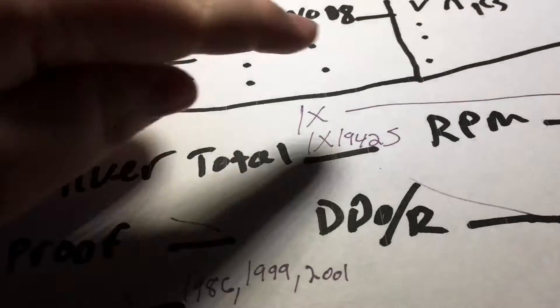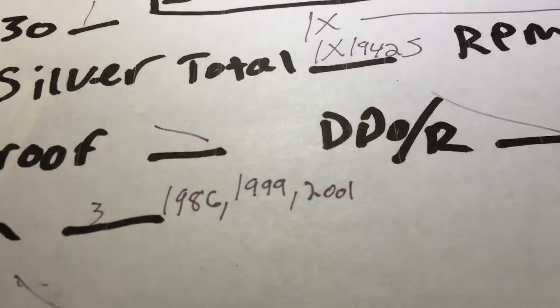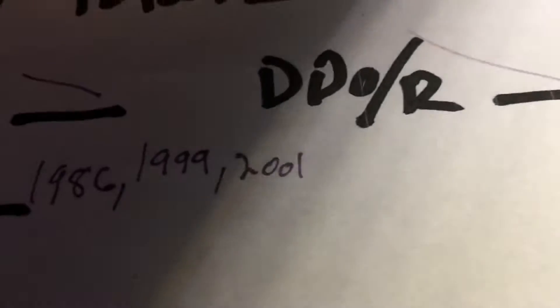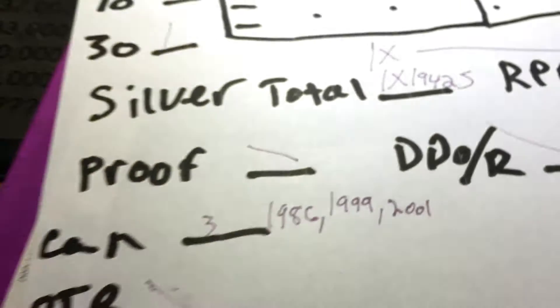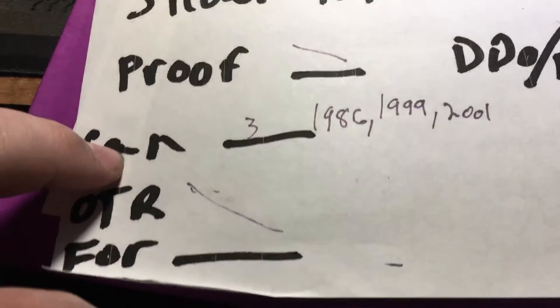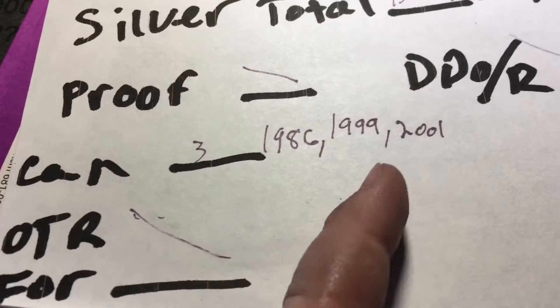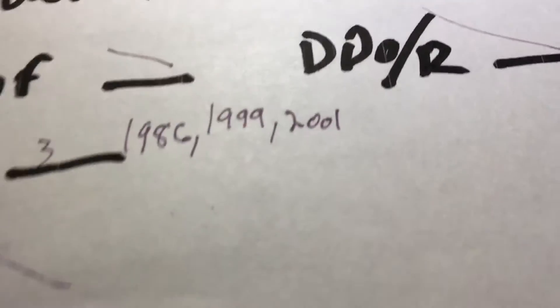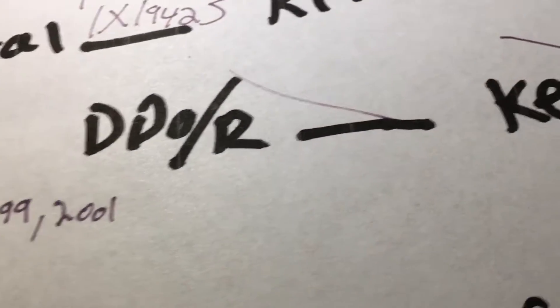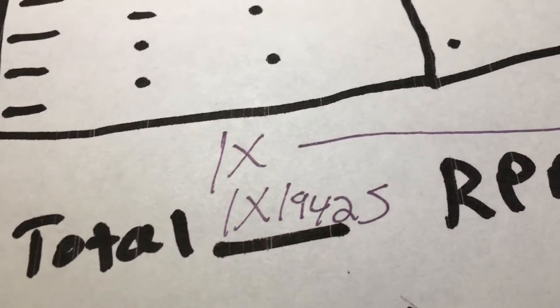We'll get to the other one here in a minute, but there's that right there. All right, we got three Canadians, an '86, a '99, and a 2001. Is that it? Yep, that's it. Let's go on to the cool thing. Silver.